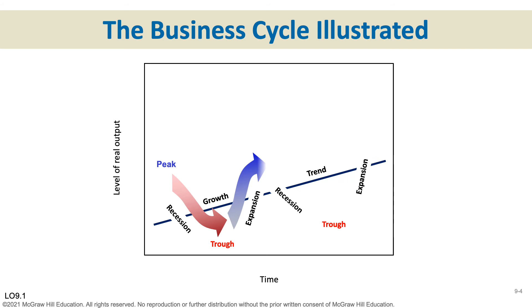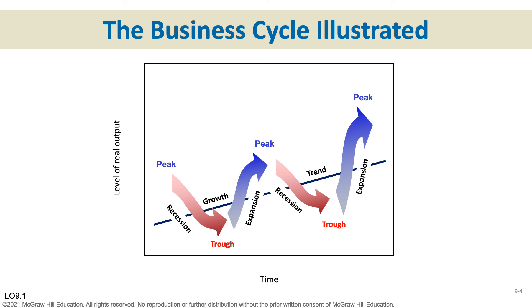This graph shows the level of real GDP over time. The long-run growth trend for the United States is always upward, shown as an upward-sloping line in the background. But we grow by fits and starts — we enter an expansionary phase, reach a peak, fall into a recession, hit the trough, and start expanding again. There's no set definition for how long any of these phases will last.